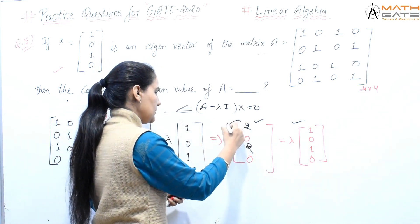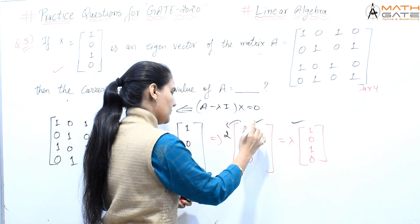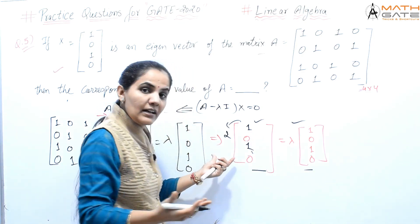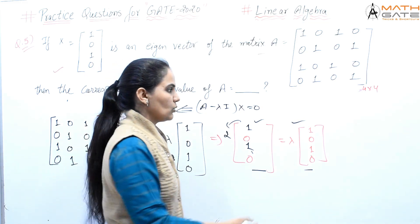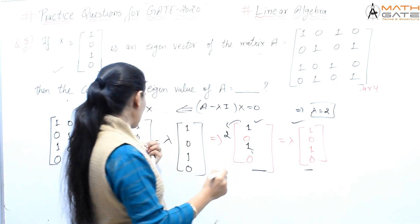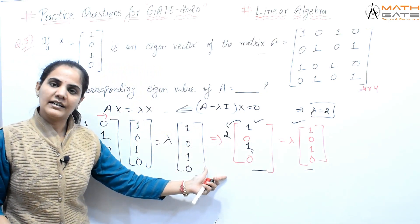When we take 2 out, it becomes 1 here and 1 here. This means x equals x, so what is the value of lambda, students? It's 2. So you've found it in a simple way: lambda equals 2. Within one or two lines we've found lambda.